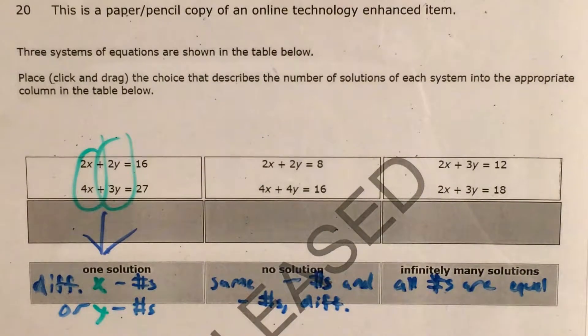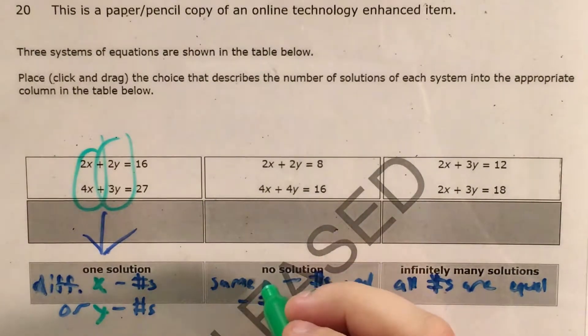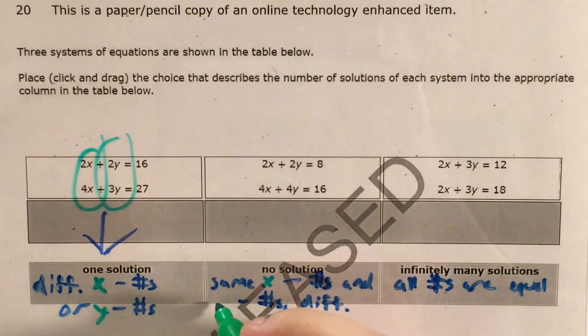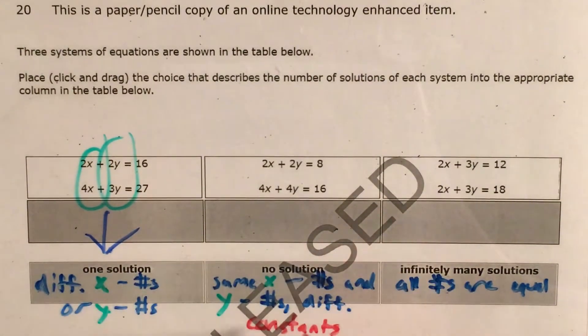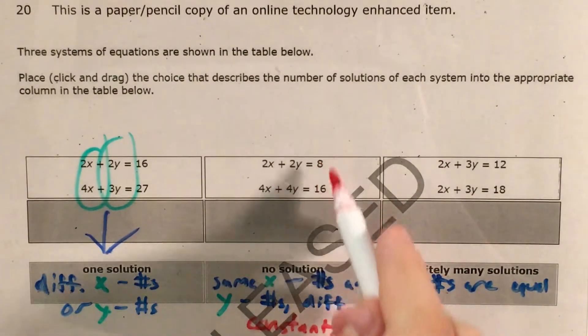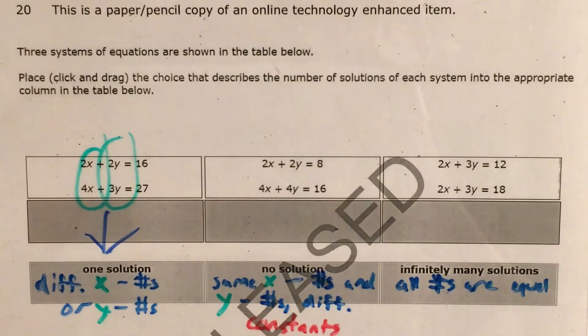Now, for a system to have no solution, we need to know that our x coefficients and our y coefficients are the same, but that we have different constants. And a constant is a number that hangs out by itself without a variable attached to it.